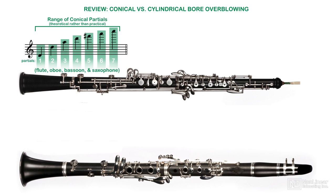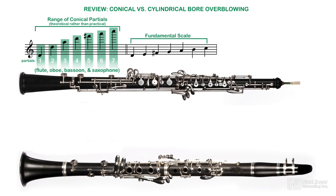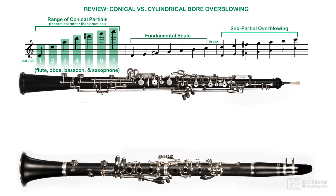Every other wind instrument in the orchestra overblows at the octave. This means that with the three main fingers on each hand, plus extra keys under the little fingers, most woodwind players can easily cover an octave of fundamental pitches before reaching the break — the point in an instrument's range where the register jumps up to overblown notes.